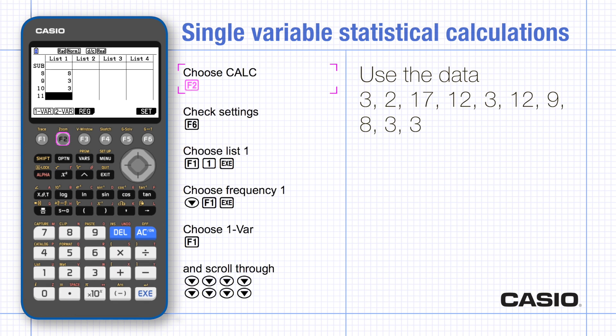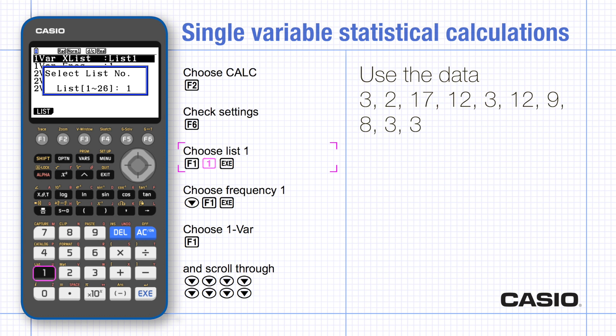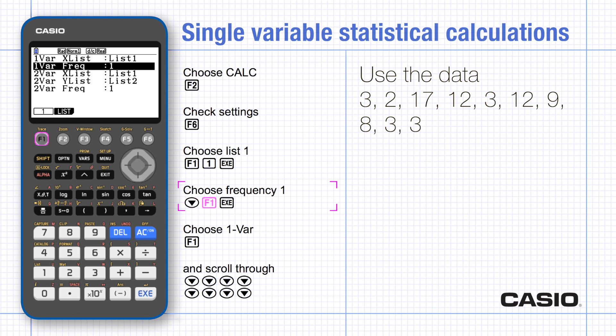Choose calc and check the settings. Set single variable calculations to list one, then scroll to set the frequency to one.